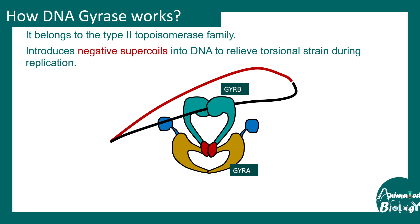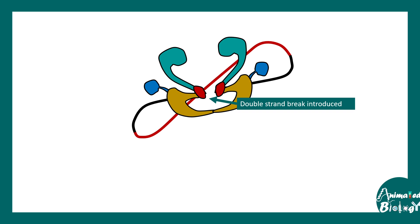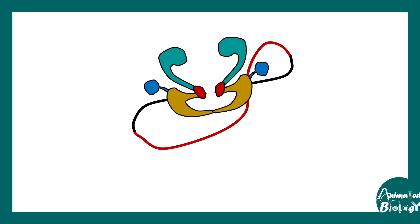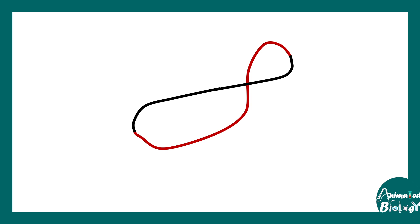DNA gyrase is essential for bacterial metabolism and growth. The gyr-B portion holds one section of the double stranded DNA and chops off another strand — in this case the black strand — introducing a double stranded DNA break. The other strand, the red strand, is then passed through this break, and the black strand is eventually re-ligated. After re-ligation the enzyme disengages, and ultimately one negative supercoil is added to the DNA.